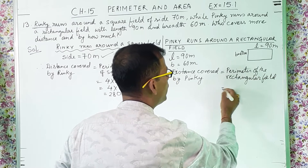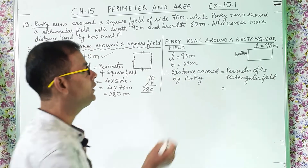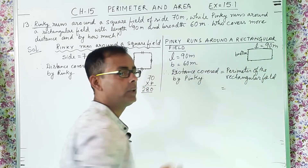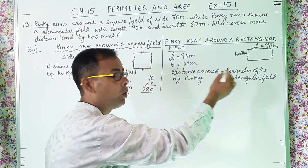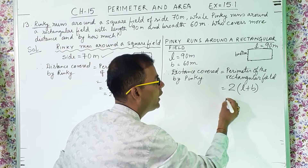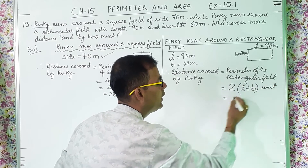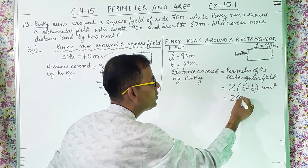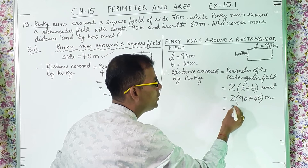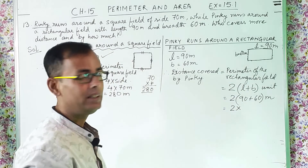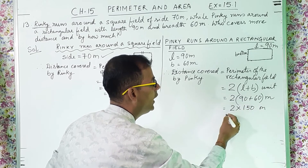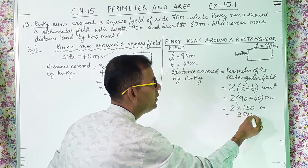What is the formula to find out the perimeter? Pinky will be running along the border. So perimeter will be 2 into length plus breadth: 2 into 90 plus 60, and the unit will be meter. 90 plus 60 is 150 meter and 2 into 150 is 300 meter.